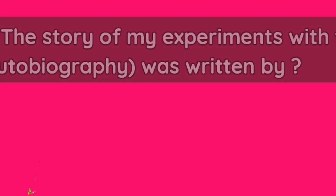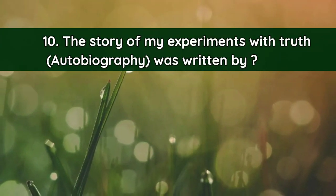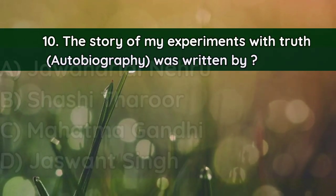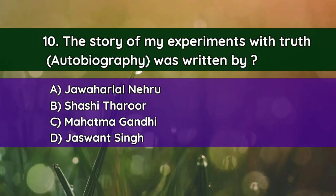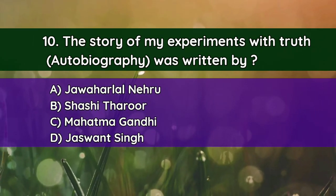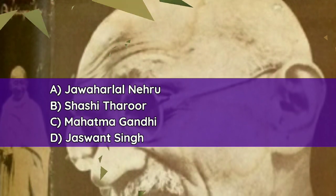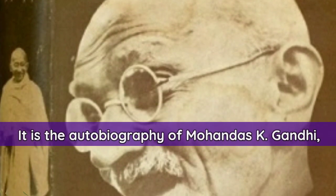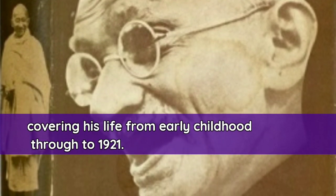Question number ten: 'The Story of My Experiments with Truth' autobiography was written by — A. Jawaharlal Nehru, B. Shashi Tharoor, C. Mahatma Gandhi, D. Jaswant Singh. And the correct answer is C — Mahatma Gandhi. It is the autobiography of Mohandas Karamchand Gandhi, covering his life from early childhood to 1921.